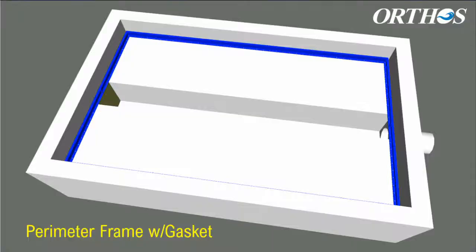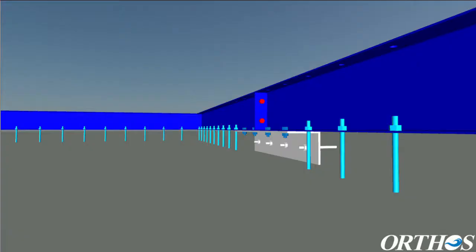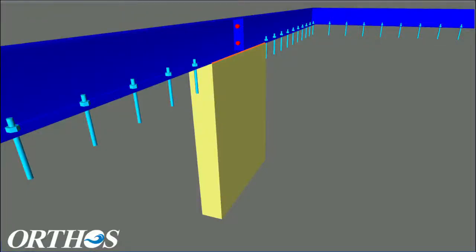After filter leveling, the perimeter frame of Maximus is secured using anchor bolts with Hilti epoxy. A gasket is placed between the perimeter frame, floor, flume support angle, and flume end plug as necessary to seal the bottom perimeter of Maximus.